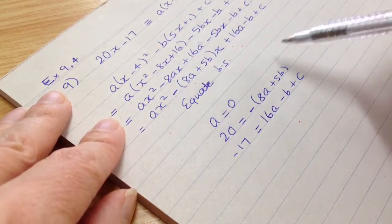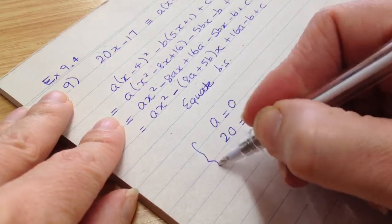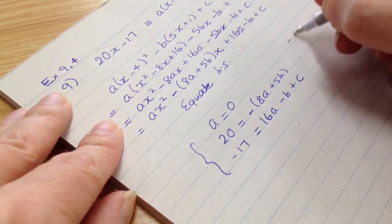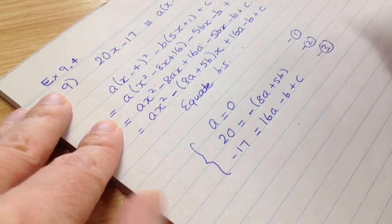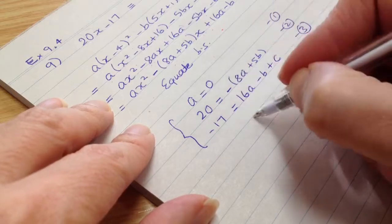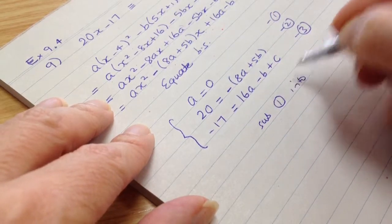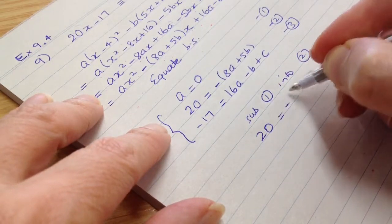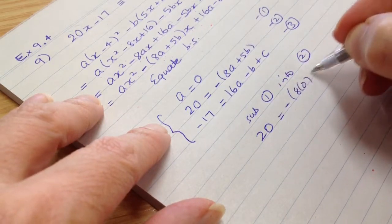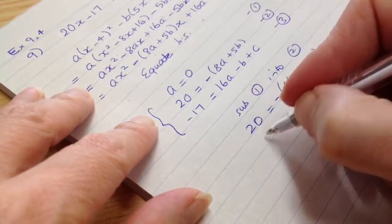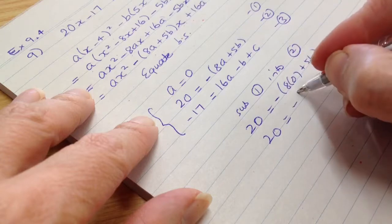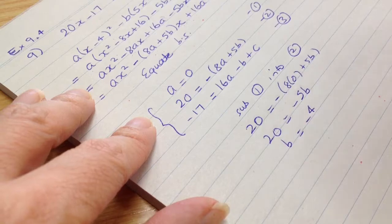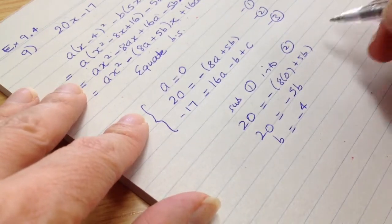All right, so now we just simply can solve all of these three simultaneously. So if a is equal to zero, all right, let's call that one, call that two, call that three. Okay, we're going to substitute one into two. All right, if we do that, we get 20 equals minus 8 times zero plus 5b. Okay, so 20 equals 5b. And of course, b is equal to 4.